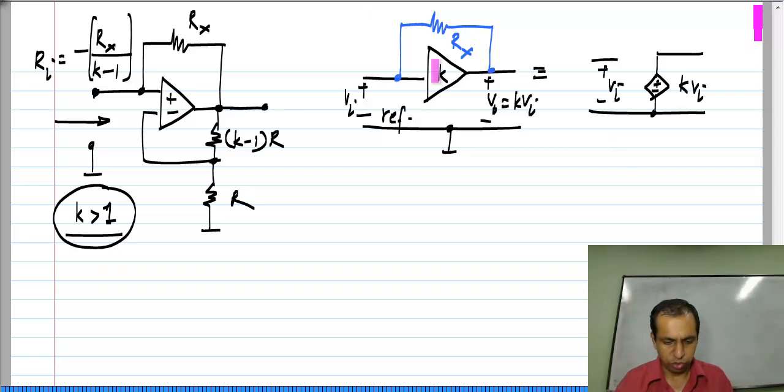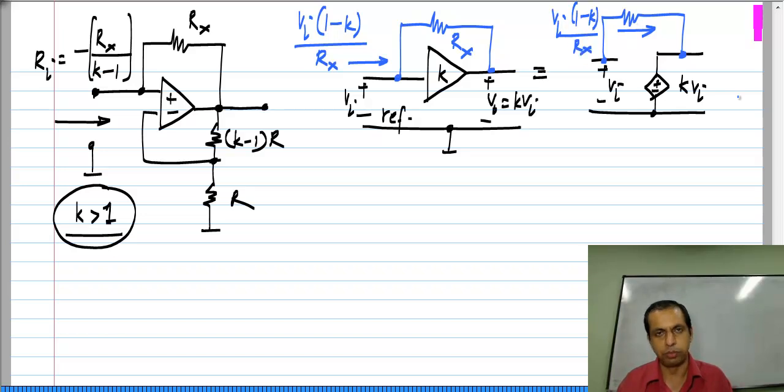If you connect a resistance between the input and the output of the amplifier R x, let us assume that no current flows in here, it is an open circuit. The amount of current that flows in there would be V i times 1 minus K divided by R x, exactly what I evaluated for the other circuit. This comes from simple Ohm's law.